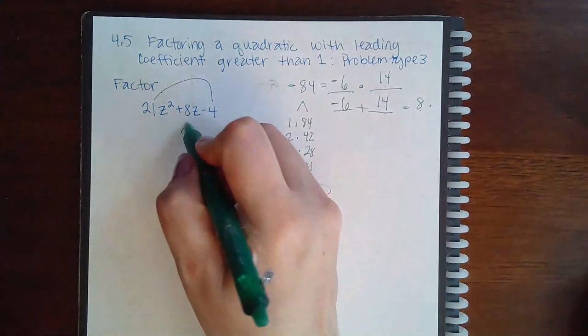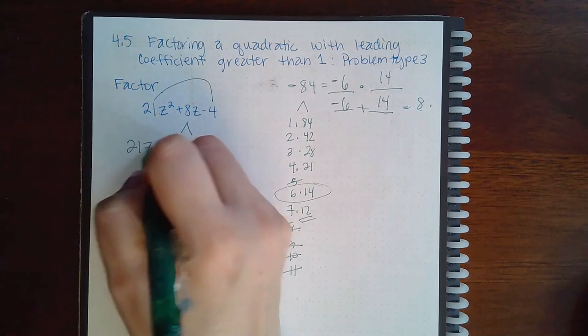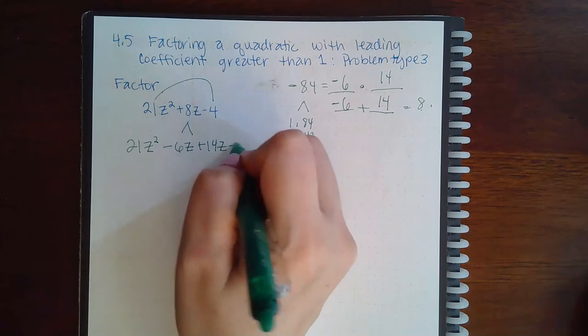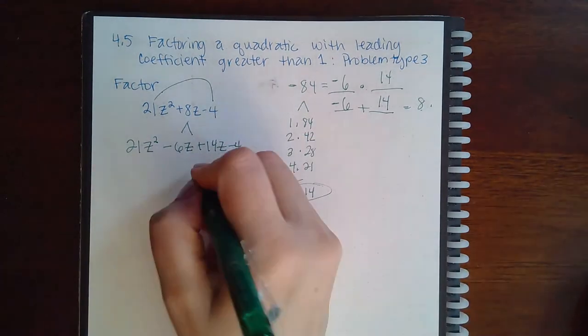So now I'm going to split the positive 8 into negative 6z plus 14z minus 4. And then group.